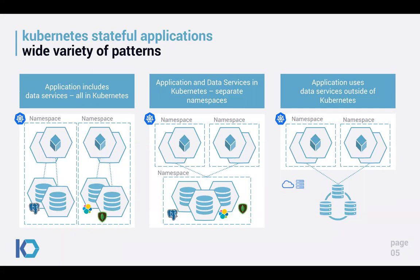The third pattern is where application components are in Kubernetes but the data services run outside — for example a cloud service like AWS RDS or Google Cloud SQL, or data services deployed in VMs. Over time, we're observing a motivation to move toward the first patterns to unify how you manage and deploy all your infrastructure, rather than using different tools for different parts.